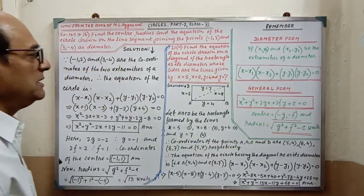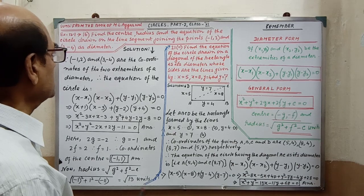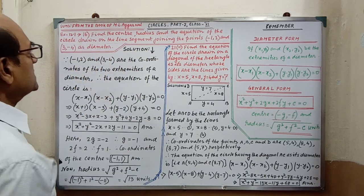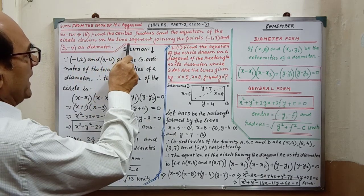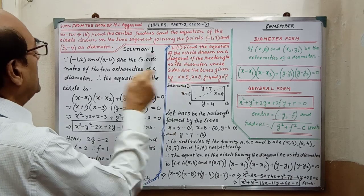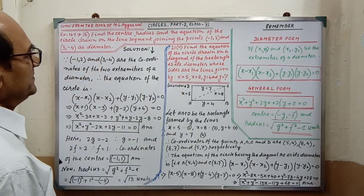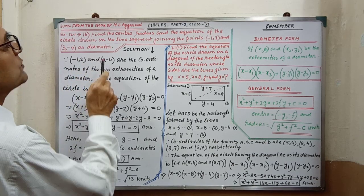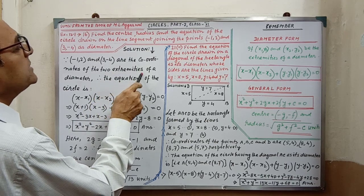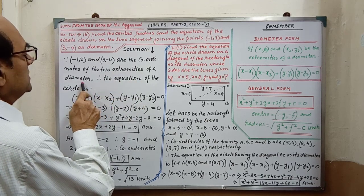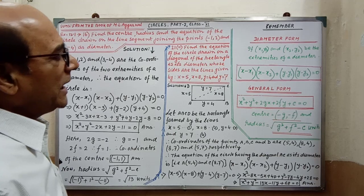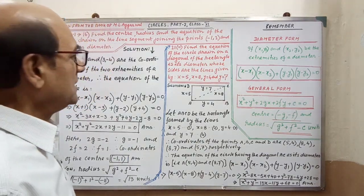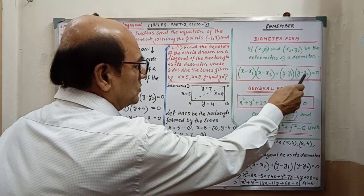All these two sums are given. Please pay your attention on the solution. Find the center, radius, and the equation of the circle drawn by the line segment joining the points as diameter. Since (minus 1, 2) and (3, minus 4) are the coordinates of the two extremities of the diameter, therefore equation of the circle — the coordinates of the two ends of the diameter are given.